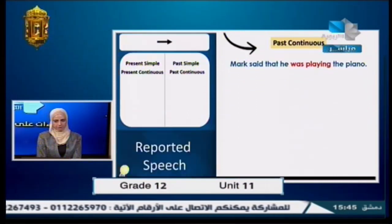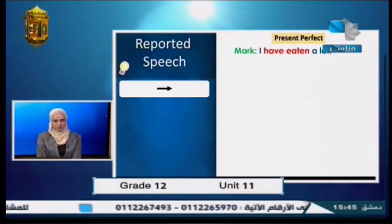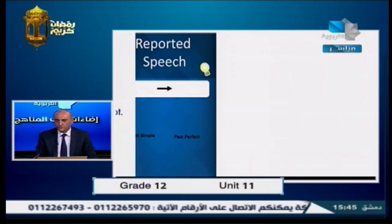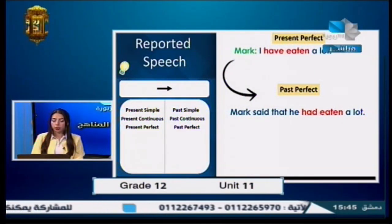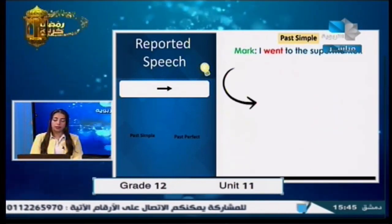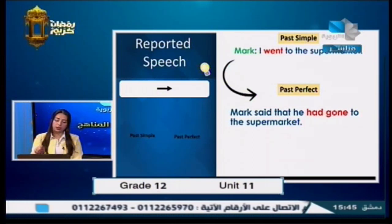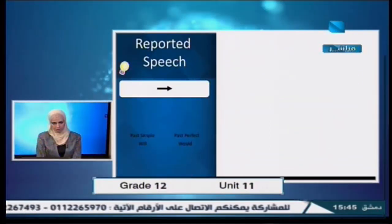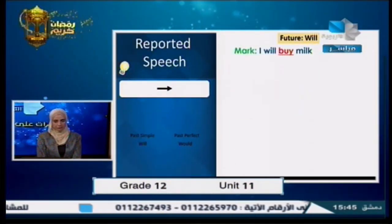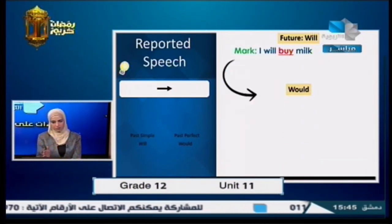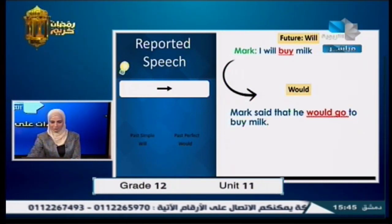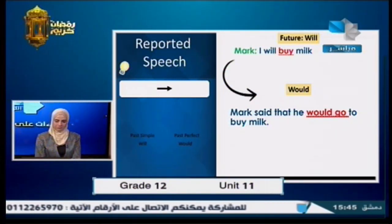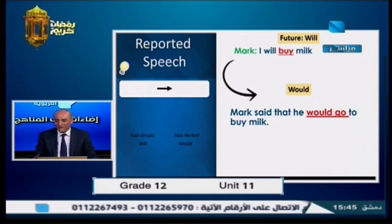Present perfect changes to past perfect — 'I have eaten a lot' becomes 'Mark said that he had eaten a lot.' Past simple changes to past perfect — 'I went to the supermarket' becomes 'Mark said that he had gone to the supermarket' — using had + past participle. Future with 'will' changes to 'would' — 'I'll buy milk' becomes 'Mark said that he would buy milk,' keeping the verb in base form after 'would.'